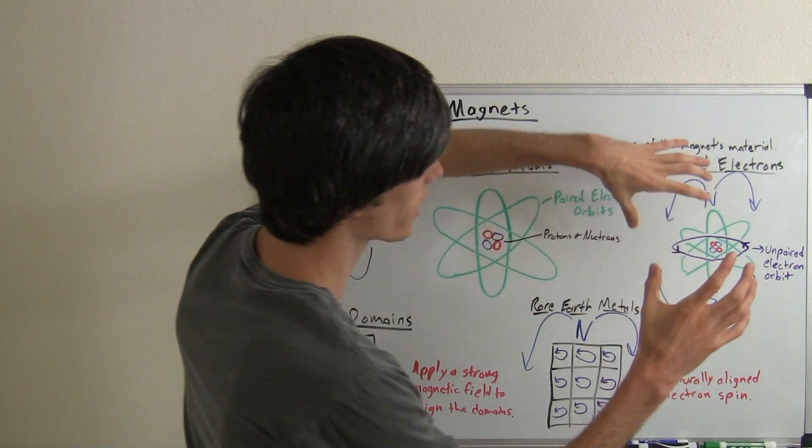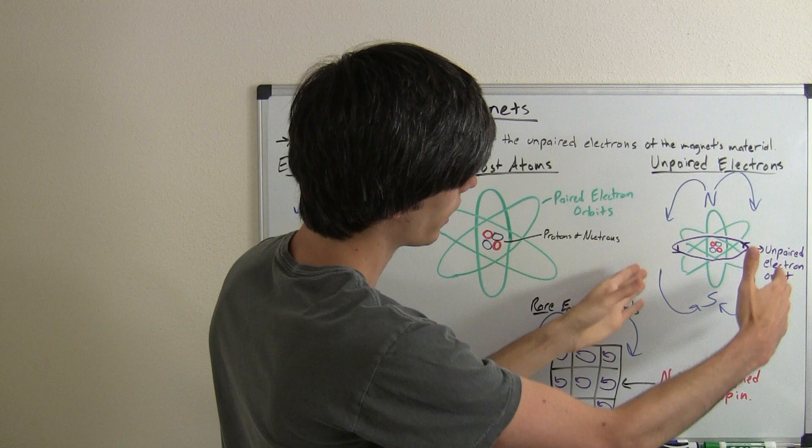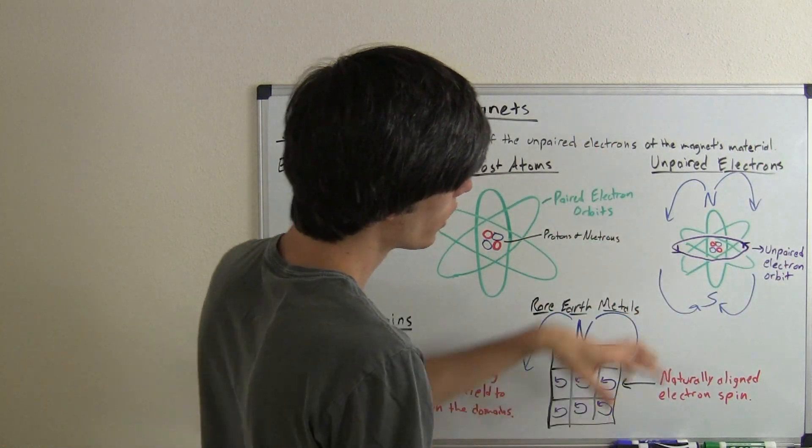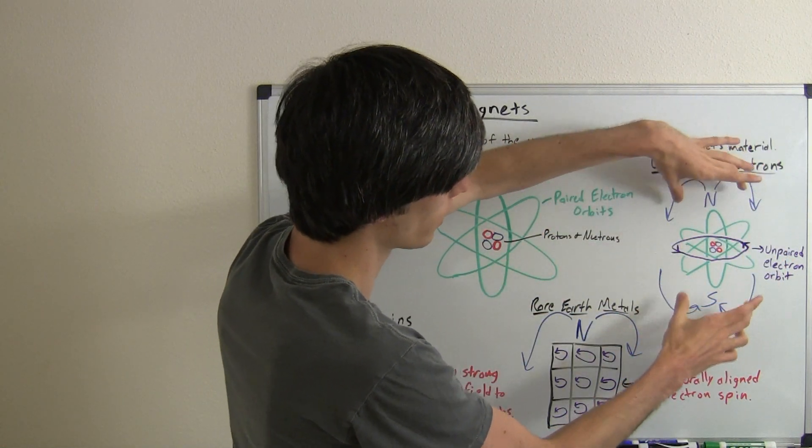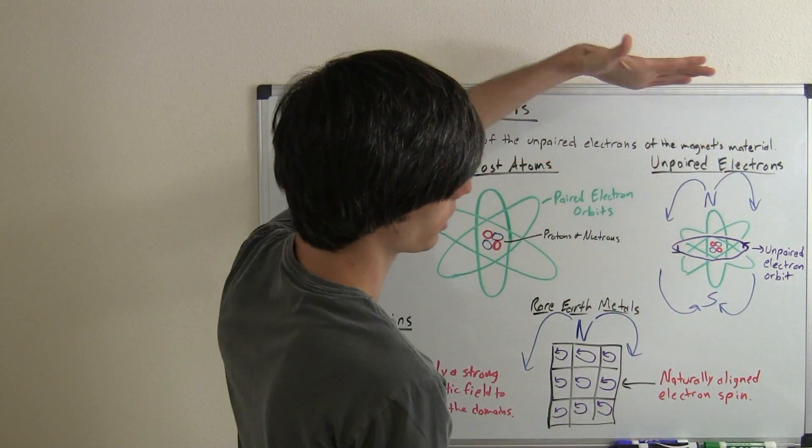So if you stack a ton of these atoms just like this one together in the same orientation you'll create a large magnet that looks just like this. You'll have north on top and south on the bottom simply by connecting a big chain of these.